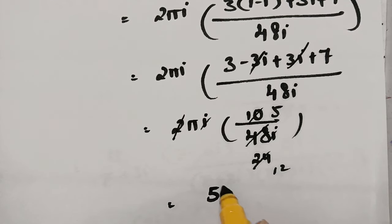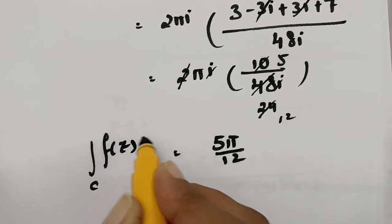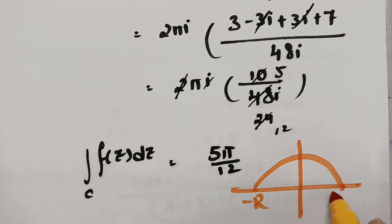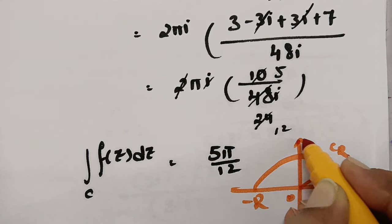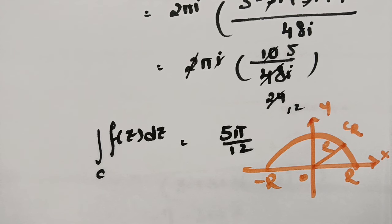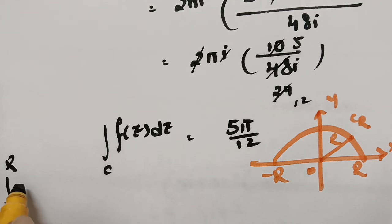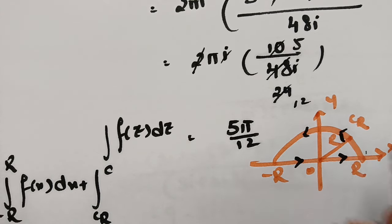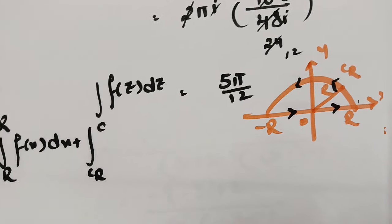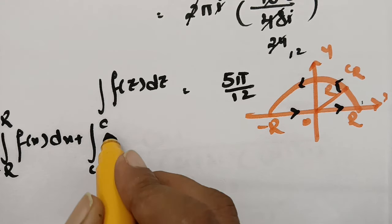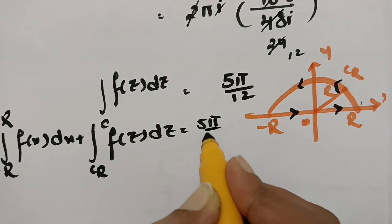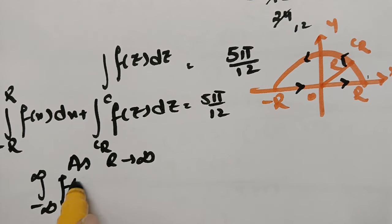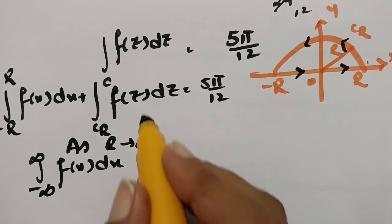So the integral over C of f(z) dz equals 5π/12. The contour C consists of two parts: the real axis from minus r to plus r, giving the integral of f(x) dx, and the semicircular arc C_r. As r → ∞, the real-axis integral becomes the integral from minus infinity to plus infinity of f(x) dx, and I will show that the integral over C_r becomes 0.